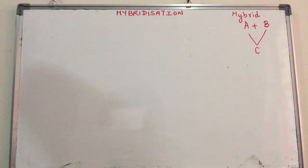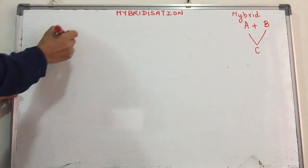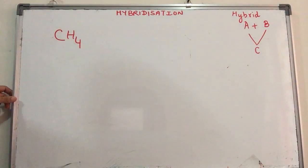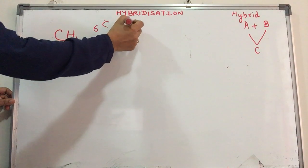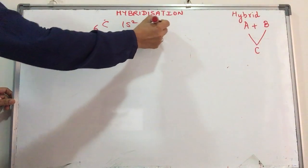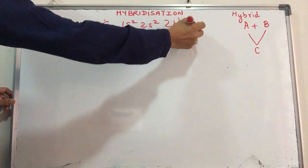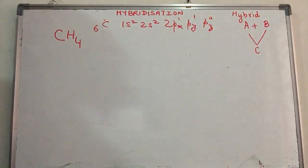When we do sigma and pi bonding for atomic orbitals, in the case of carbon, we're taking the example of methane, CH4. Carbon has atomic number 6: 1s², 2s², 2px¹, 2py¹, 2pz⁰.